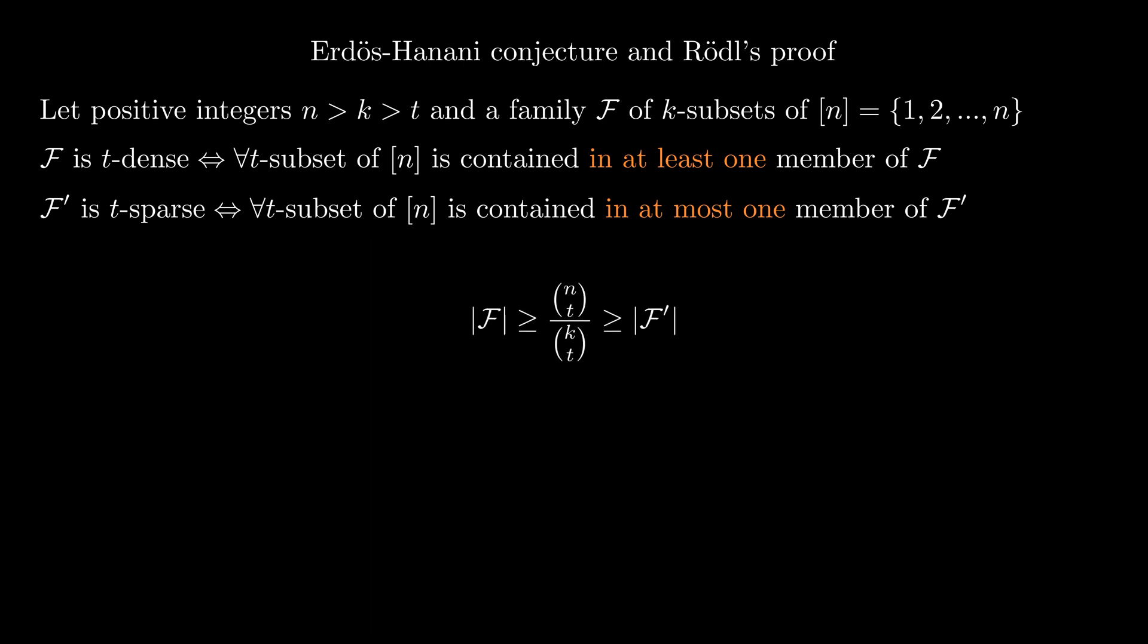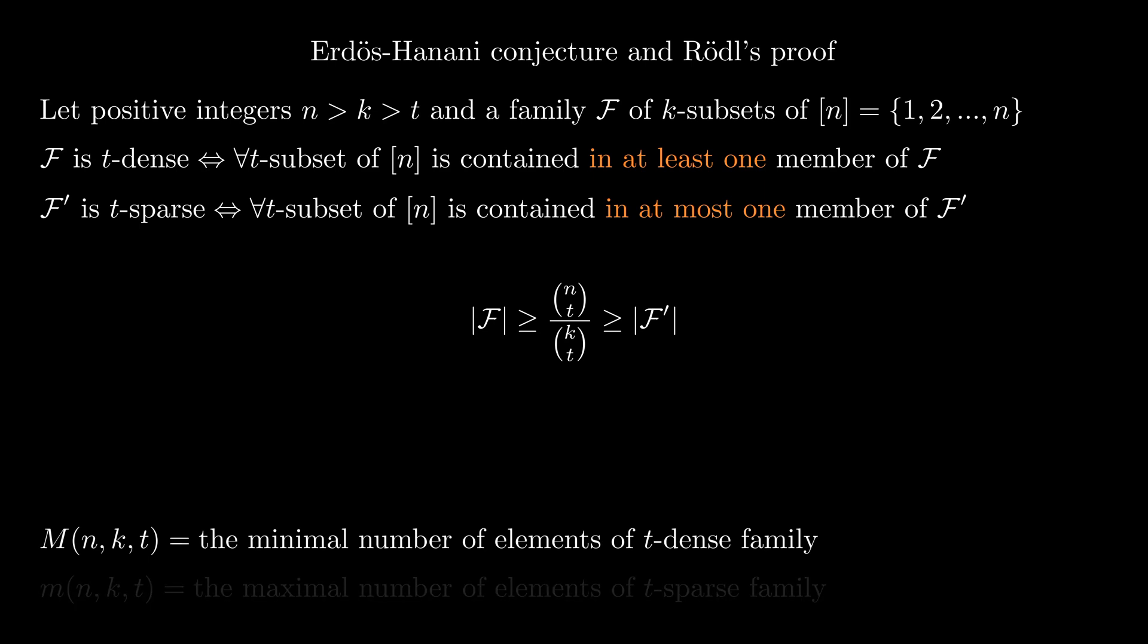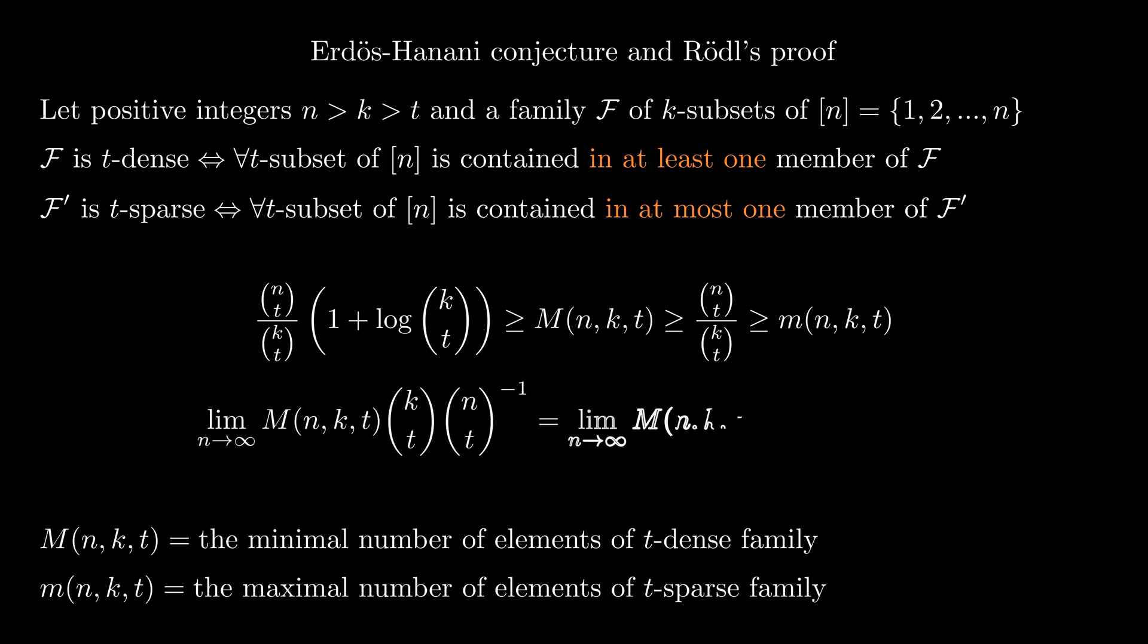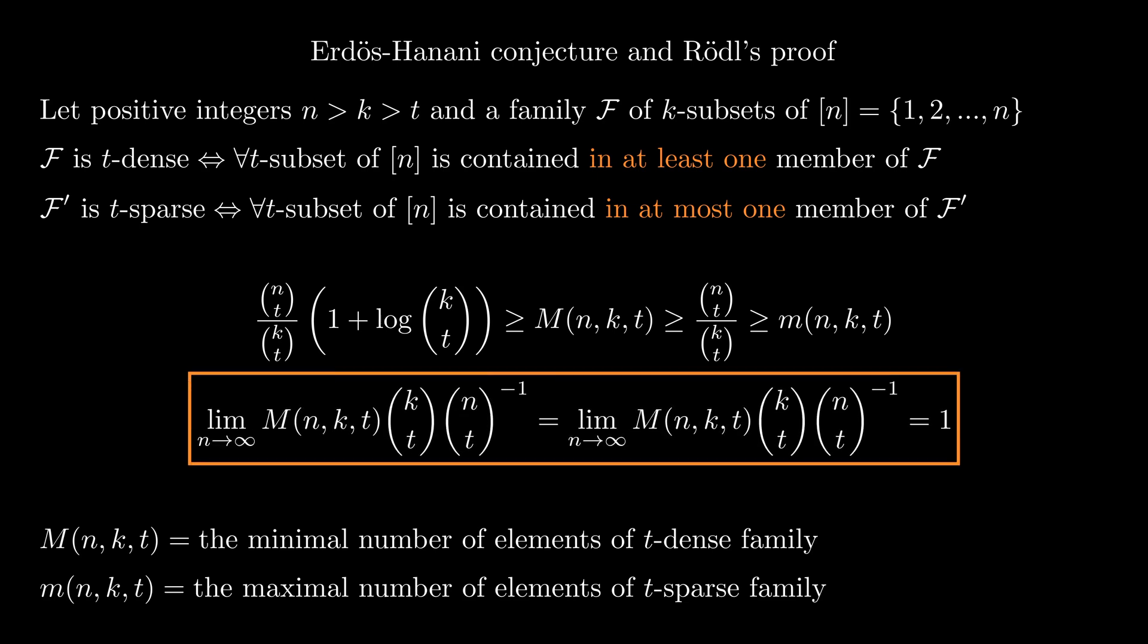With that being said, we have the following inequality. Now, we will use the same notation as Erdős and Spencer first did to denote the minimal number of elements of a t dense family and the maximal number of elements of a t sparse family. From the first inequality, we get the following. Later, it was also found an upper bound for the minimal number of elements of a t dense family, leading to the following limit equality, conjectured by Hanani and Erdős.